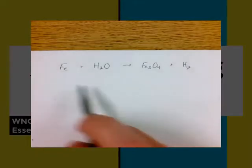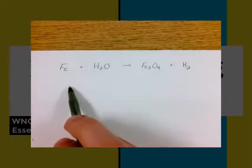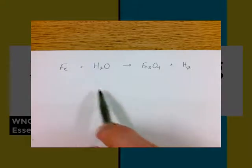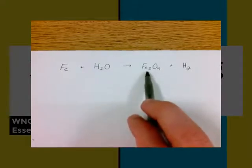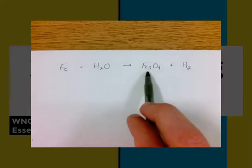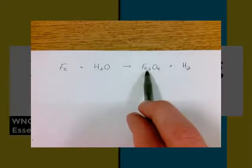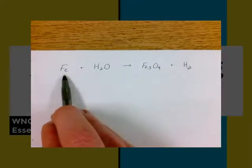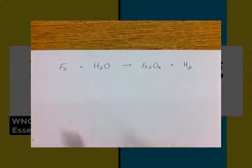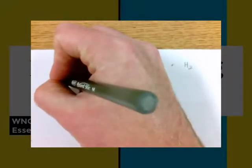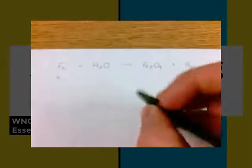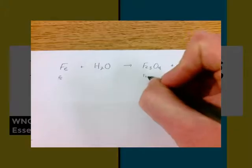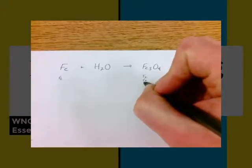Here's my unbalanced reaction equation — you should have this written in your notes. Fe plus H2O produces Fe2O4 and H2. These are my reactants and these are my products. Leave yourself a lot of space in between because we're going to add coefficients and it's a lot neater that way. We basically want to start by finding something that's not balanced. Iron looks like it's not balanced, and you could start with any of them, but let's start with iron.